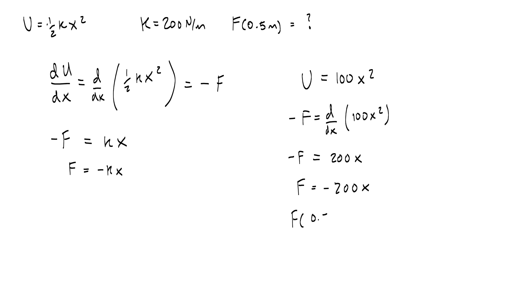And if I want to find the force at 0.5 meters, then all I need to do is take 200 newtons per meter and multiply that by 0.5 meters, which half of 100 is—sorry, half of 200 is 100—multiply that by negative 1, the meters cancel out, and there, I've figured out the force in the spring.